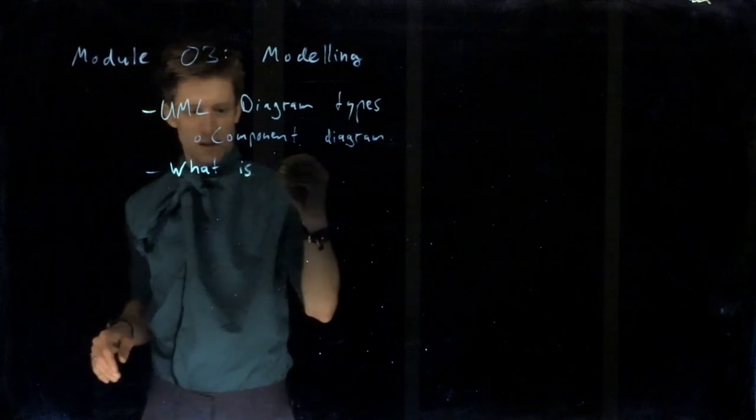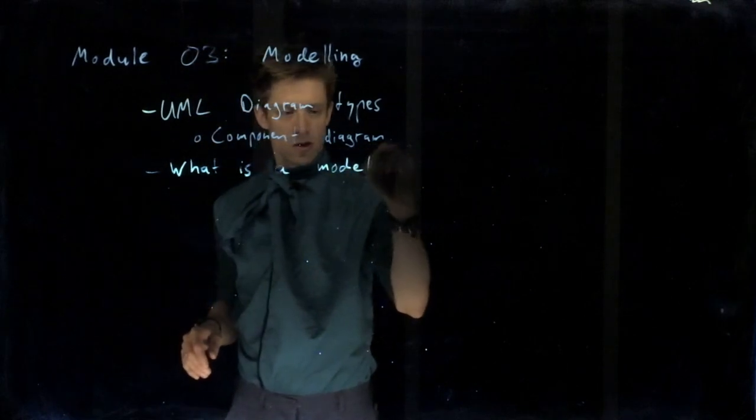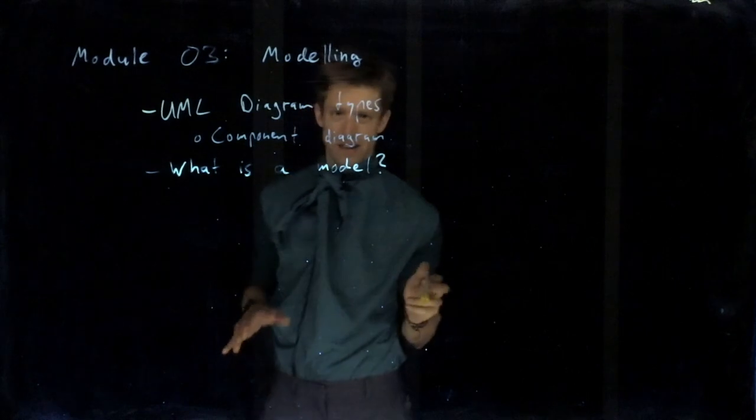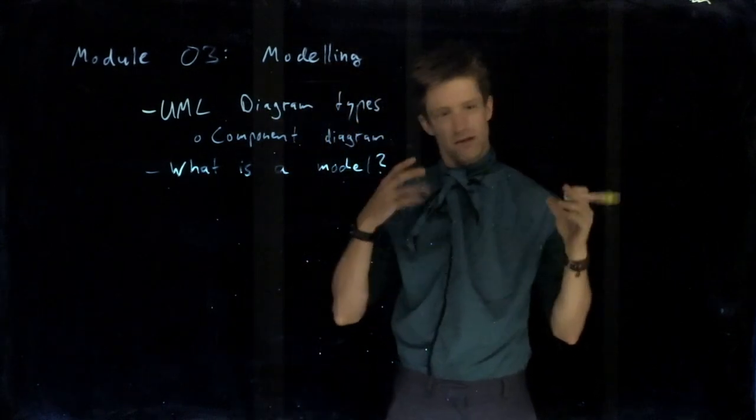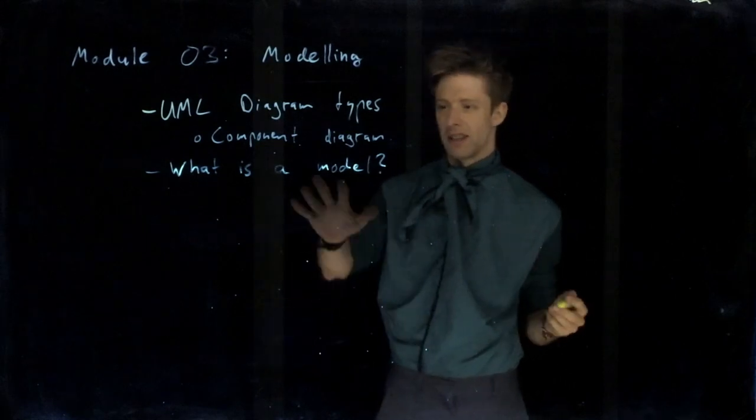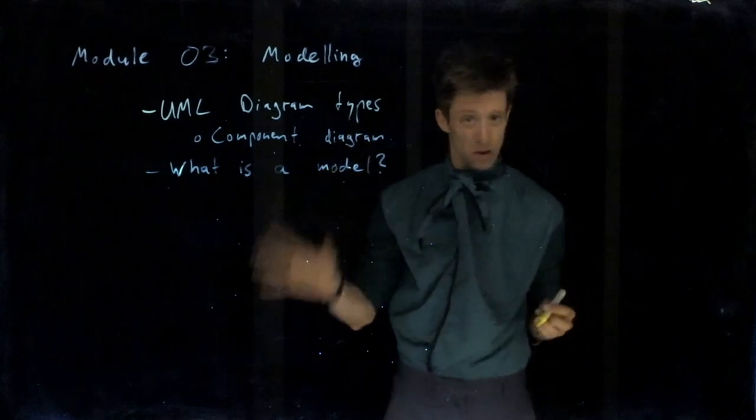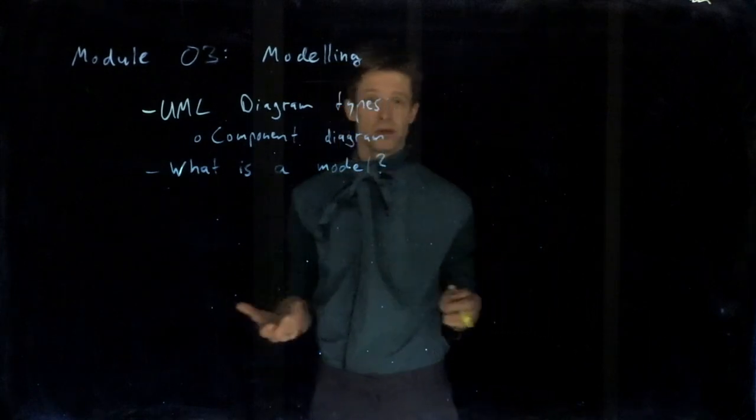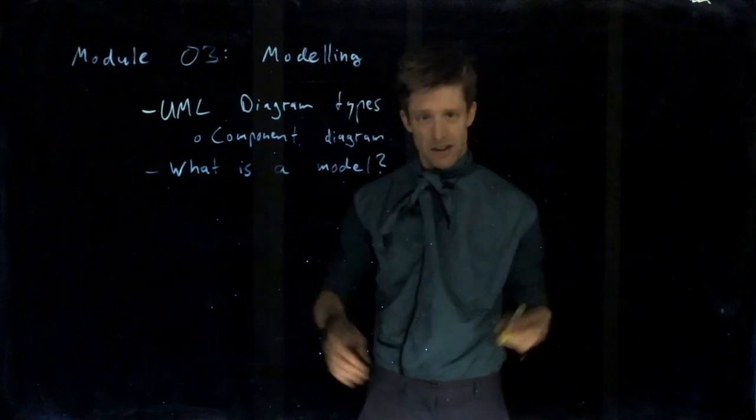What is actually a model? Because again, many courses introduce the different diagrams you can draw and you have to draw a class diagram, you have to do different things. But on a theoretical level, it might be important to actually discuss what the model is, what it should be, and especially also what it is in other areas of software engineering but also other disciplines.